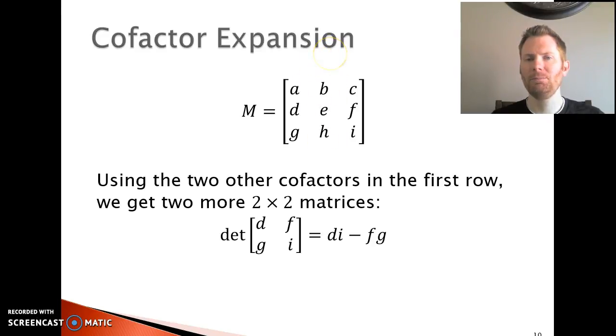There are two other cofactors in the first row, namely B and C, and we can get two more 2 by 2 matrices whose determinants we can find. For the cofactor B, we're going to cancel out ABC and cancel out BEH, and we're left with the matrix DFGI, whose determinant is DI minus FG. If we use C as our cofactor and cross out ABC and CFI, we're left with the 2 by 2 matrix here, DEGH, whose determinant would be D times H minus E times G.